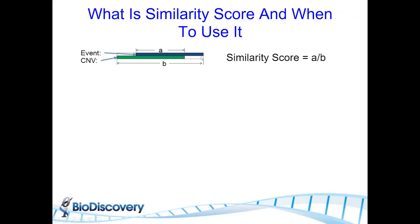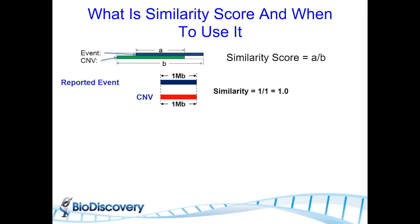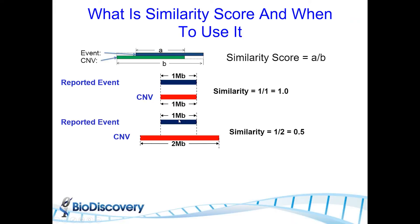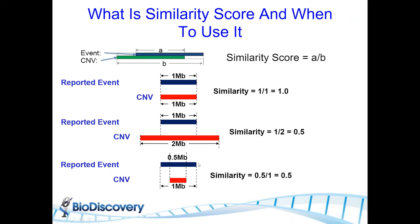The similarity score works as follows: we have an event in question and a known CNV, calculating a similarity score of A (area of overlap) versus B (total area across both regions). For example, if our reported event is one megabase and our CNV is one megabase with the exact same start and end, our similarity score is 1/1 = 1.0 — perfectly similar. If our reported event is one megabase but the CNV is two megabases with significantly different coordinates, similarity is 1/2 = 0.5. Similarly, if our event is one megabase and previous reports were 0.5 megabases, the similarity score is again 0.5.